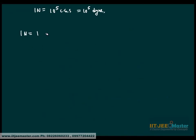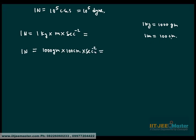1 N is 1 kg into meter into second to the power minus 2. While I write kilogram, 1 kg is 1000 gram. 1 meter is 100 cm. So you replace this quantity 1 N, that is 1 kg is 1000 gram, and meter is 100 cm, and second is as such. And you will see that 1000 into 100 becomes 10 to the power 5.